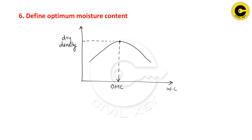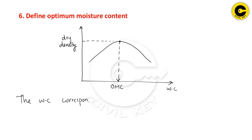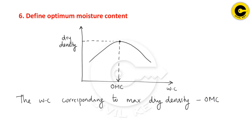The water content corresponding to maximum dry density is termed as optimum moisture content. That is the definition of OMC.